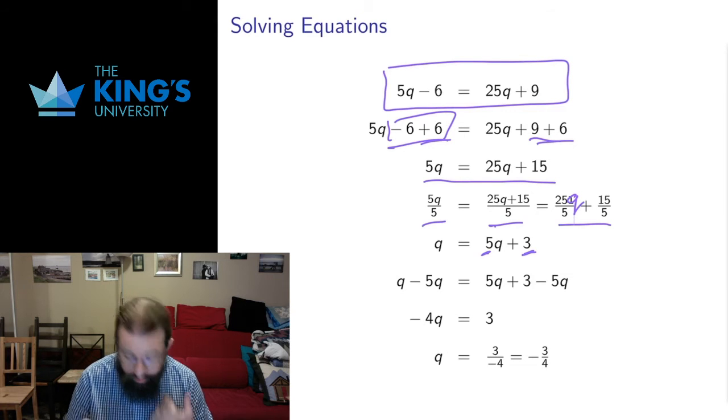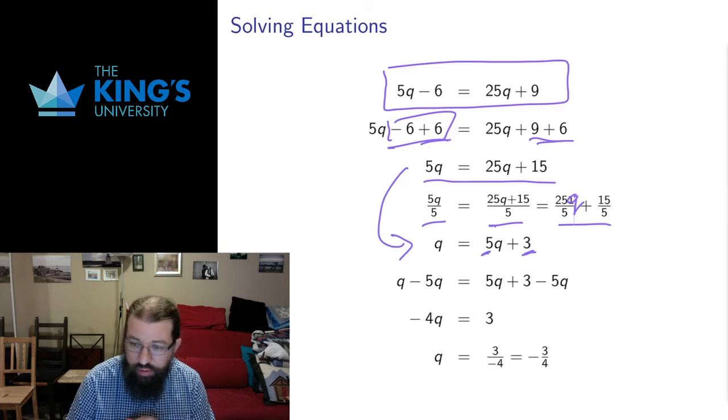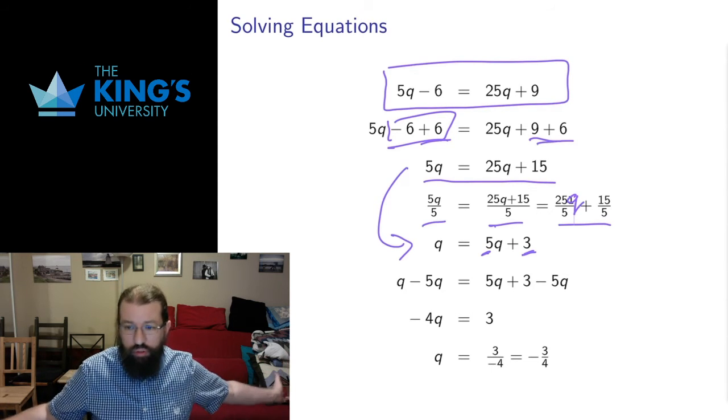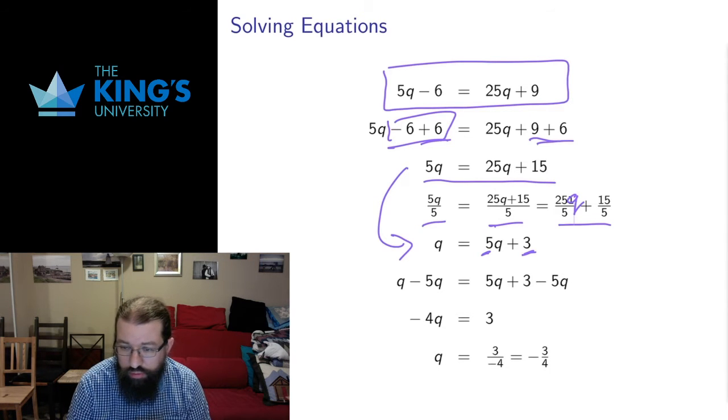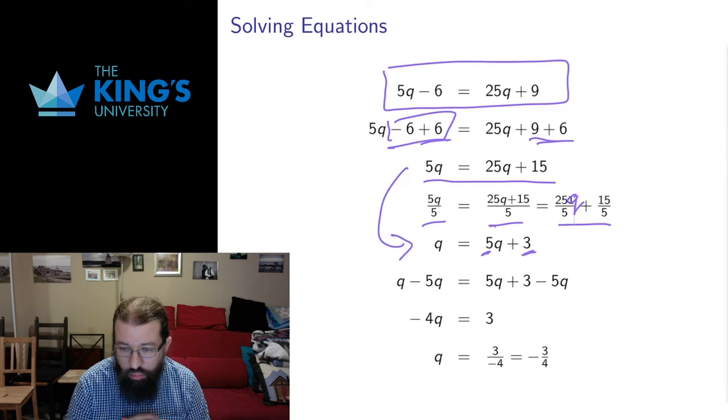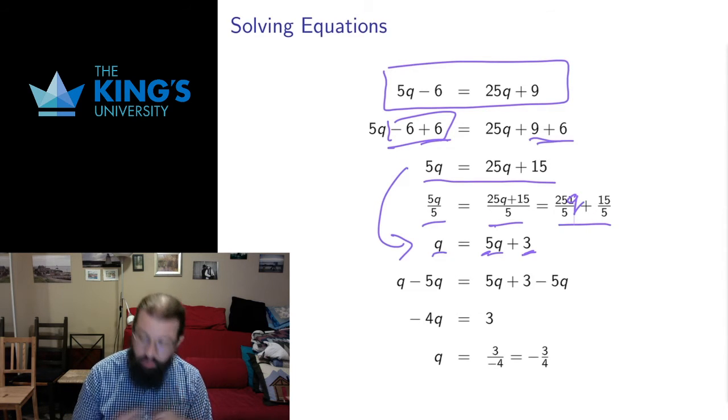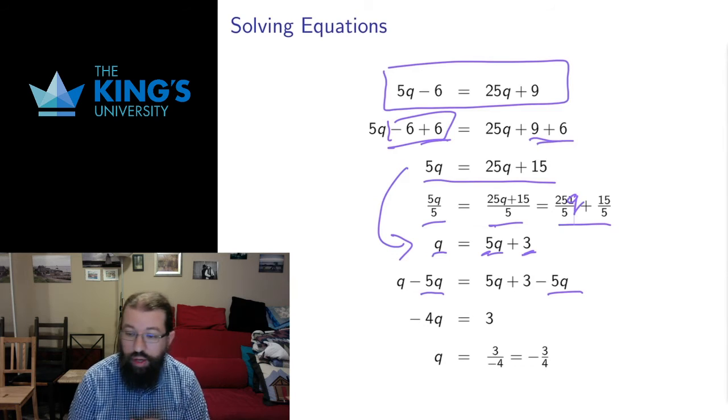Each of these steps, there are infinitely many choices of what you can do in mathematics, but we're trying to do things that are hopefully going to make our life easier, to make our situation more clear. Now I have q on the left and q on the right. I'm going to try and group all the q's together by subtracting 5q from both sides.